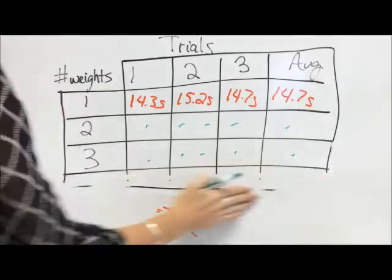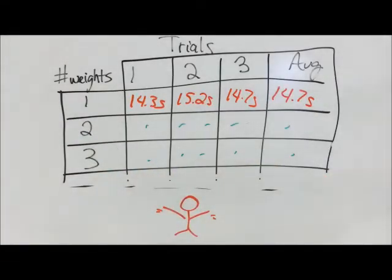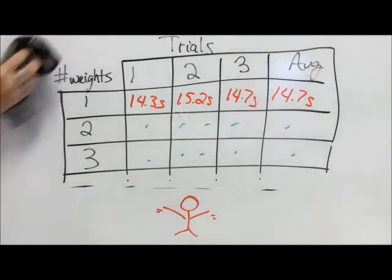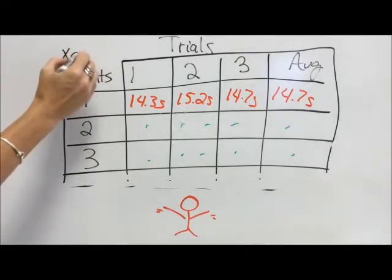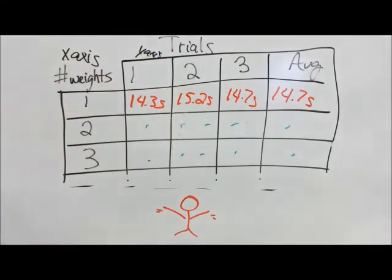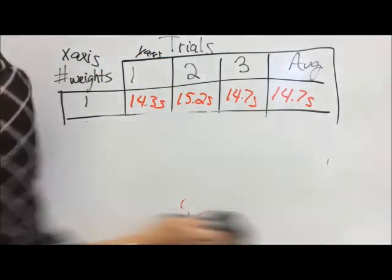I will do that for two weights and for three weights, and now I will have three averages. The number of weights goes over here because that's my independent variable—that's going to go on my x-axis. The trials data is going to go on my y-axis. So now that I have my cool chart, it's going to be real easy to graph this data.